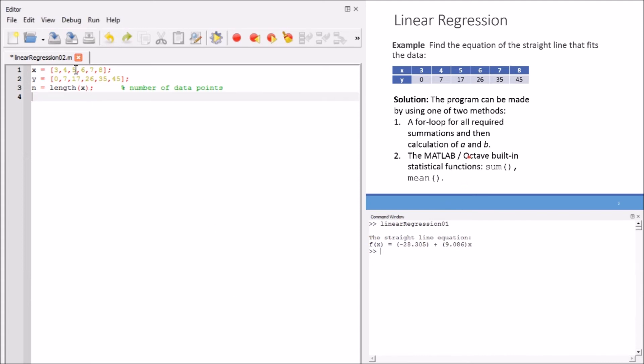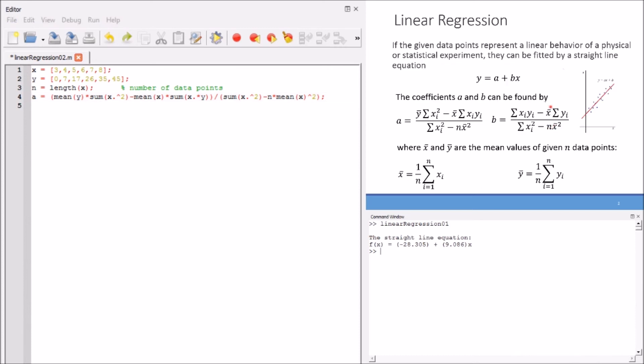At the beginning, we define the x and y arrays and we also compute the value of n, or get the value of n, using the function length. Now, directly, we don't need any initialization or any loop, because these two functions will compute the value of the sum and mean directly. We don't need any kind of loops or initial values. Directly we have, let me go to the formulae and show you the exact application.